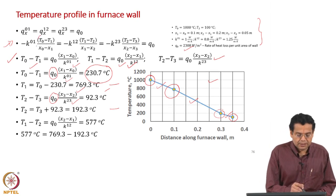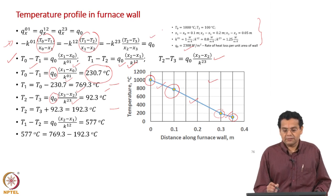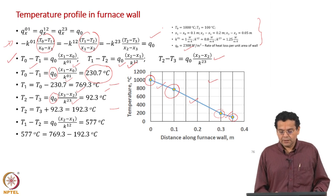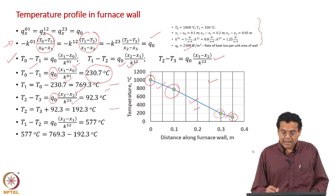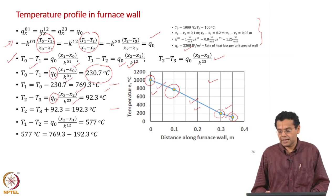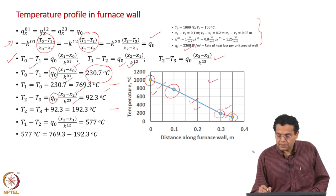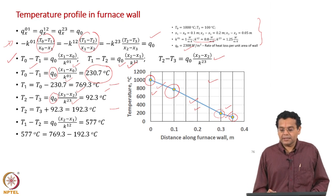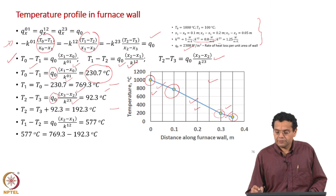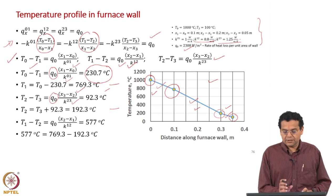Looking at the slopes of the temperature profile in each slab: the slopes are inversely proportional to the thermal conductivity since q_0 is constant. The slope of the temperature profile in the second slab is higher than in the first slab because the second slab's thermal conductivity is lower. The slope in the third slab is lower than in the first slab because the third slab's thermal conductivity is higher.